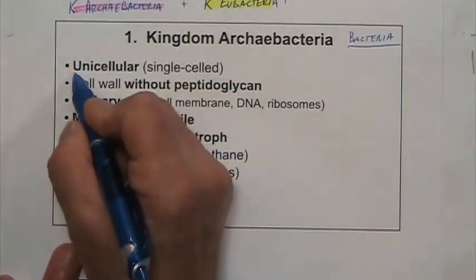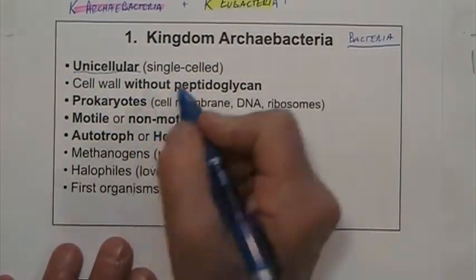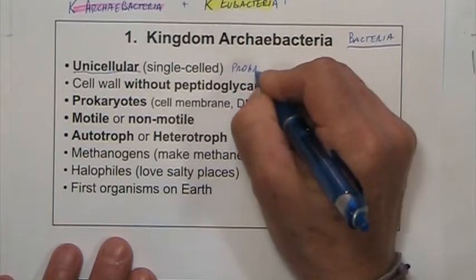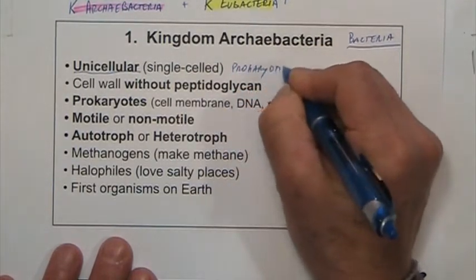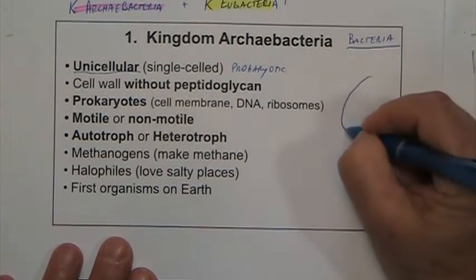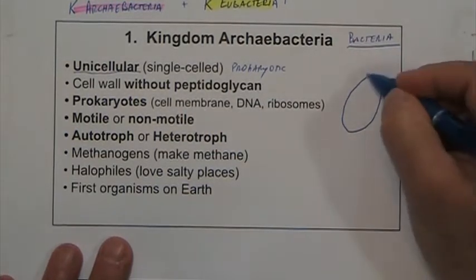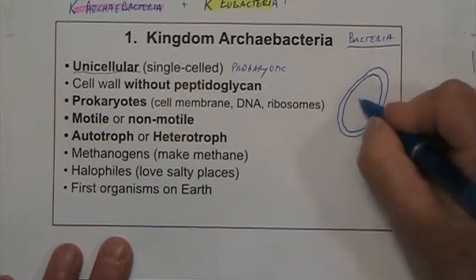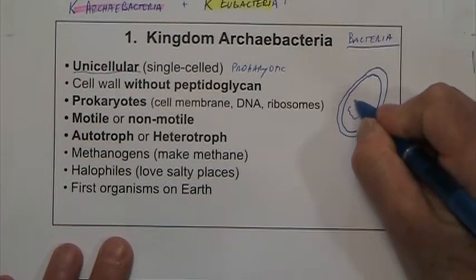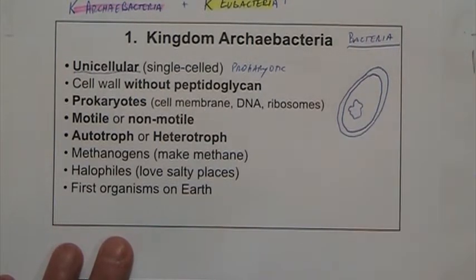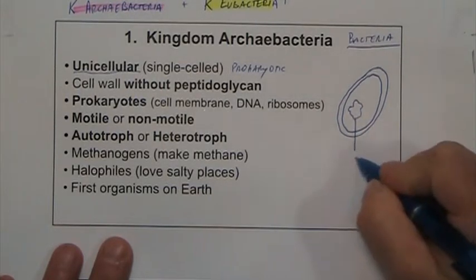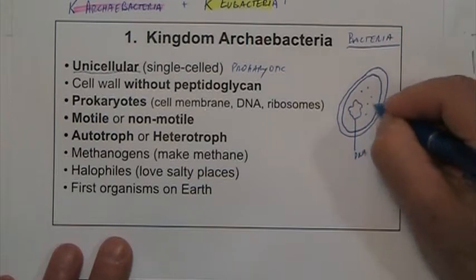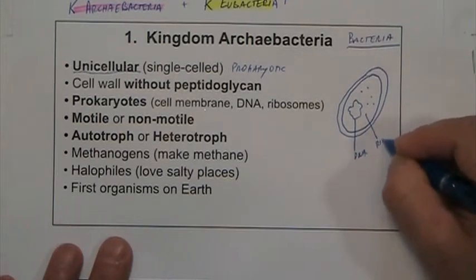Like all bacteria, they are unicellular and prokaryotic in structure. Prokaryotic means that you have a cell membrane, a cell wall, a piece of circular DNA — only one molecule of DNA — and ribosomes to make proteins.